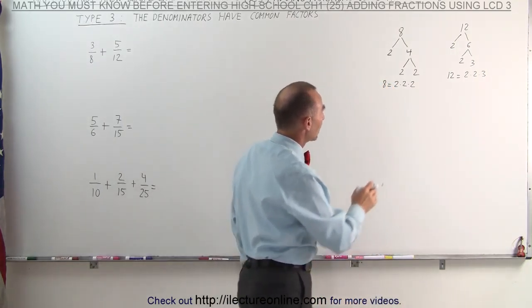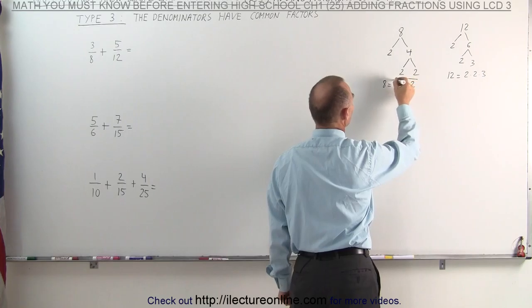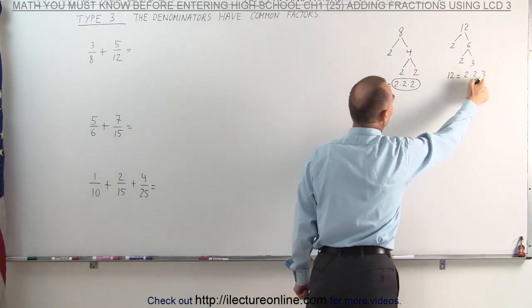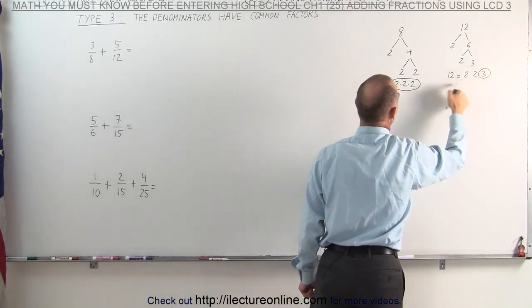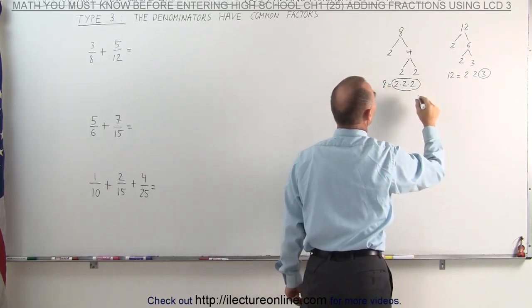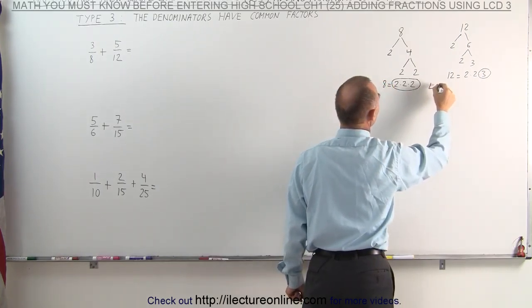So that means that 8 can be written as 2 times 2 times 2. Taking the number 12: 12 can be divided by 2, that gives us 6; 6 can be divided by 2, that gives us 3; which means that 12 can be written as 2 times 2 times 3.